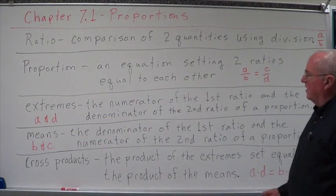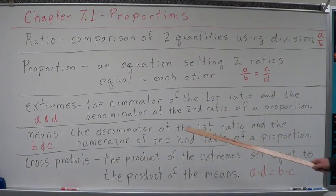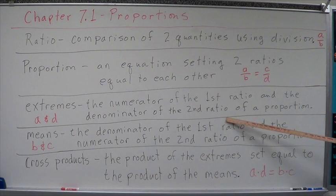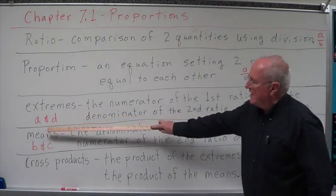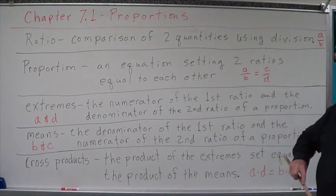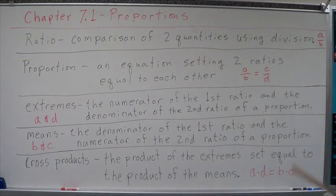The extremes are the numerator of the first ratio and the denominator of the second ratio of a proportion. So we've taken two ratios, we've set them up as a proportion. We want the numerator of the first ratio, the denominator of the second, and that is what they call the extremes. I don't know why they did that. That's just what they call it. So that would be A and D in this proportion.